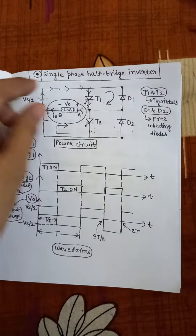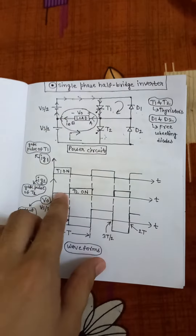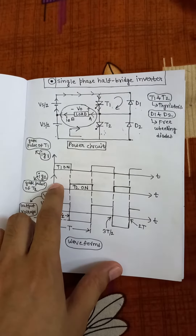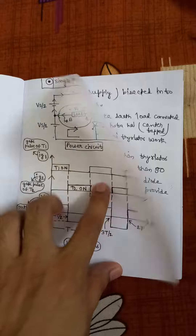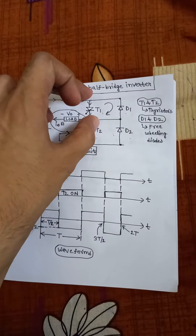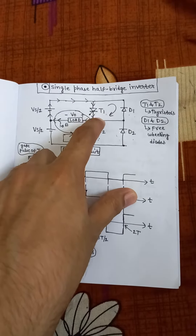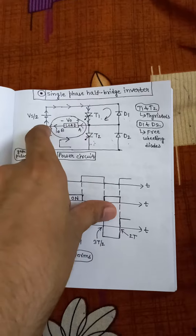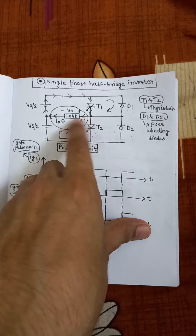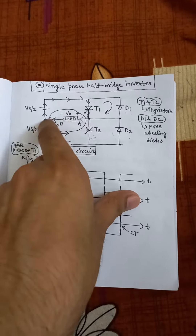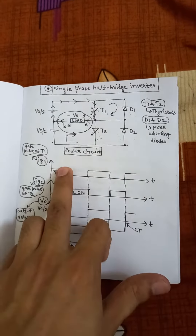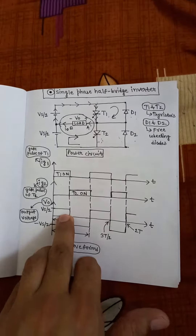When we trigger T1 by applying a gate pulse, thyristor T2 does not receive a gate pulse, so T2 becomes off and T1 becomes on. Vs/2 is applied to thyristor T1 and current starts flowing through T1 in this direction through the DC source. The load current I0 is always constant and flowing in the same direction, so both currents are matching. Therefore, we get a positive Vs/2 across the load when thyristor T1 is on.